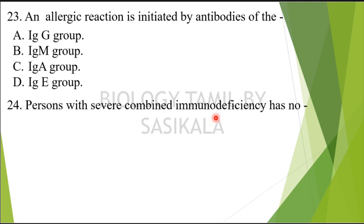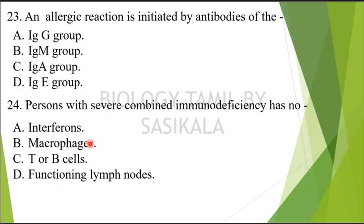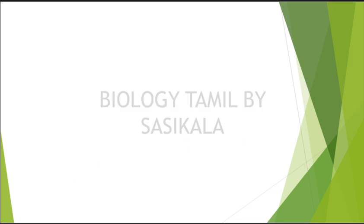Question 23: Persons with severe combined immunodeficiency — SCID disease — have no functioning what? The choices are: interferon, macrophages, T cells, B cells, or functioning lymph nodes. SCID persons lack functioning lymphocytes.